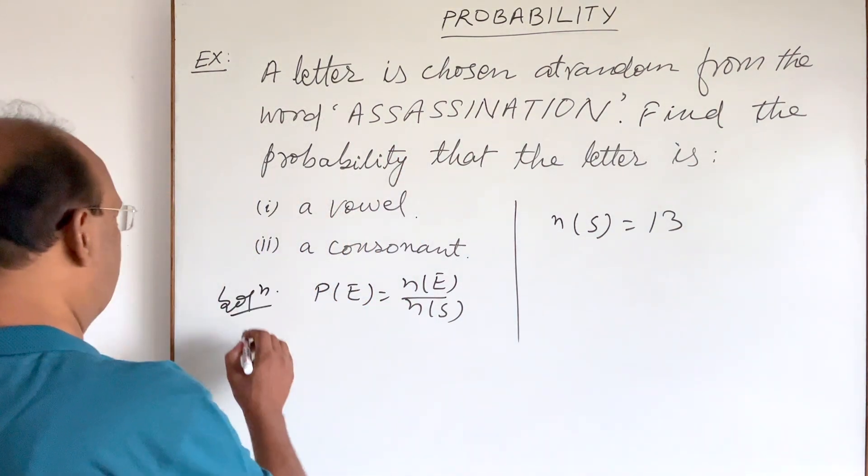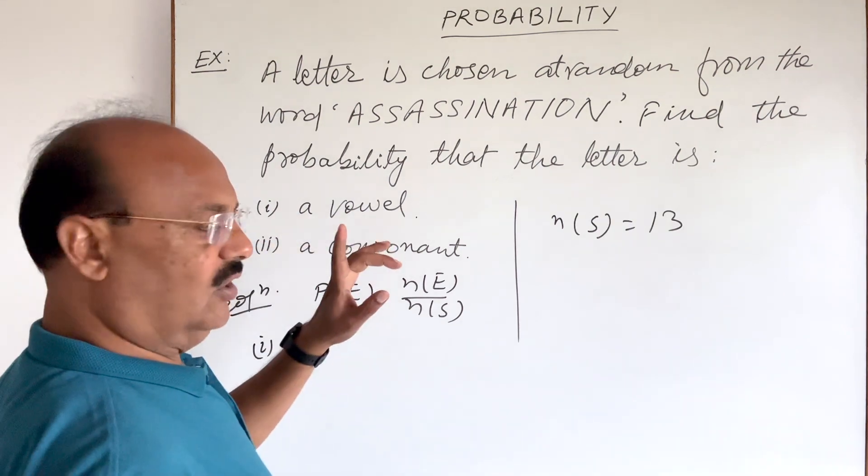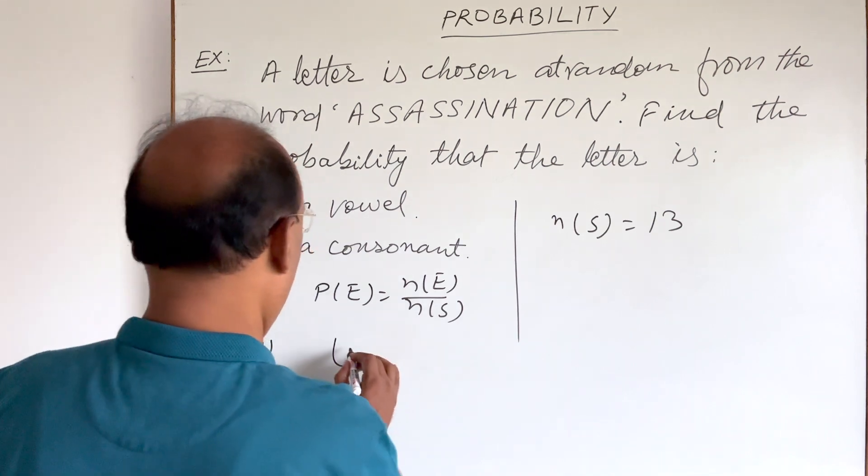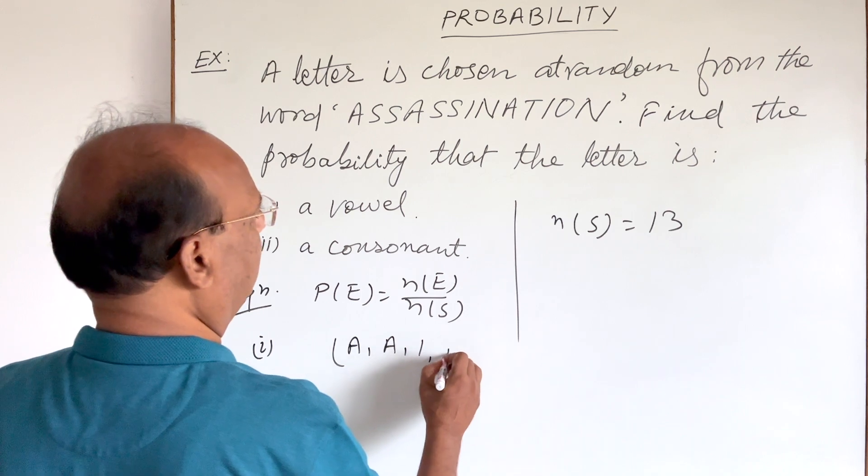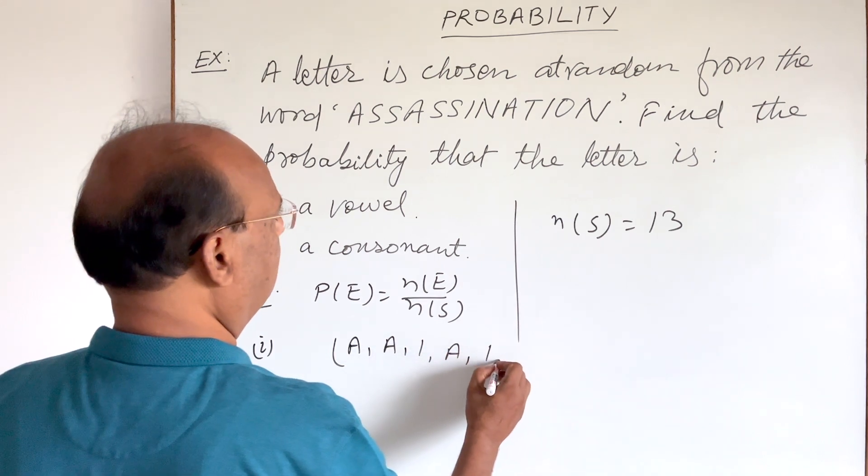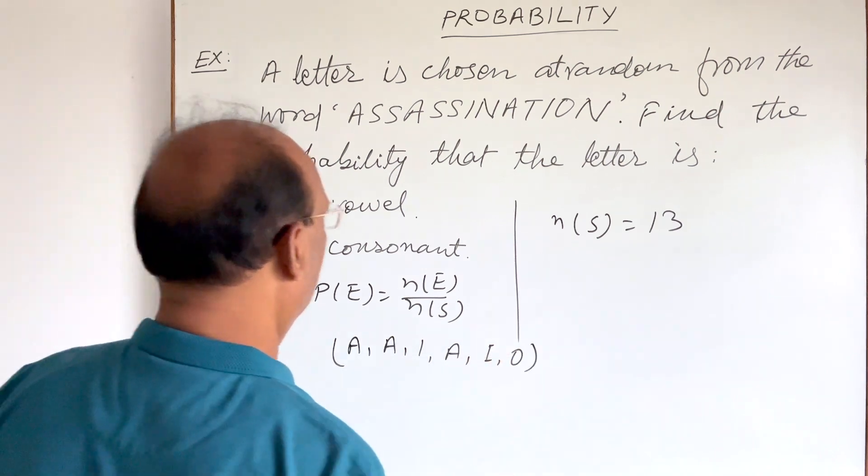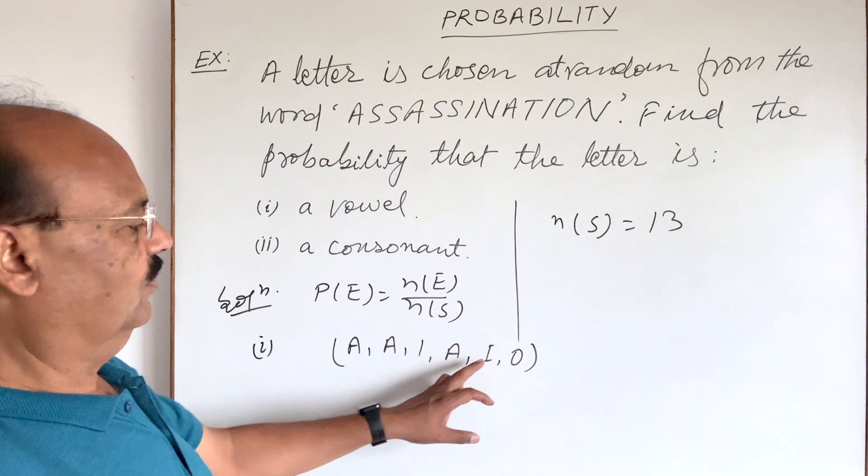For the first part, when we are taking only vowels, let us check how many vowels are here. A, A, I, again A, then again I, then O. These are vowels. How many vowels are here? 1, 2, 3, 4, 5, 6.